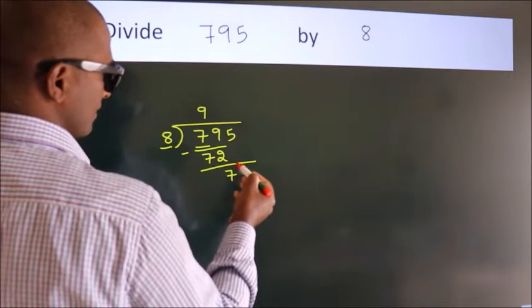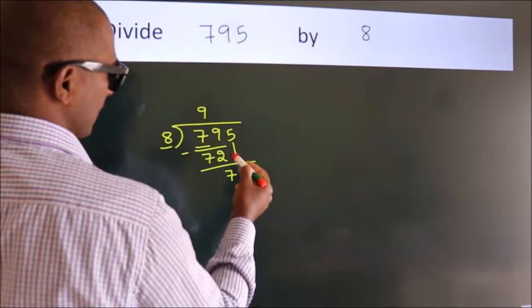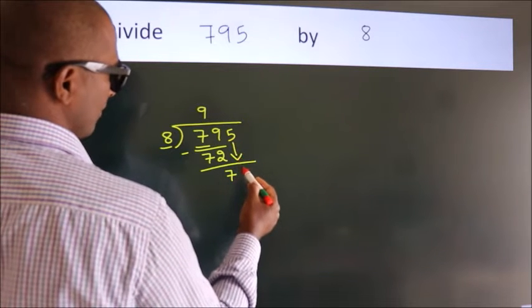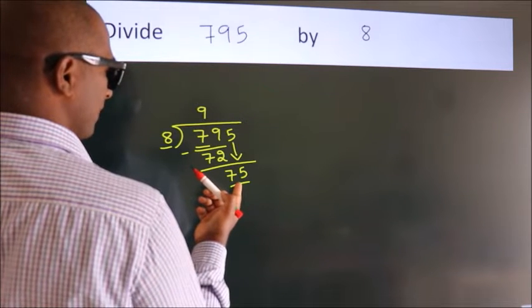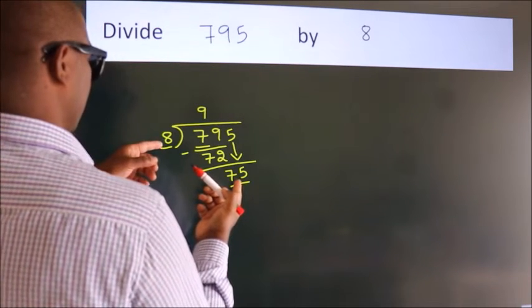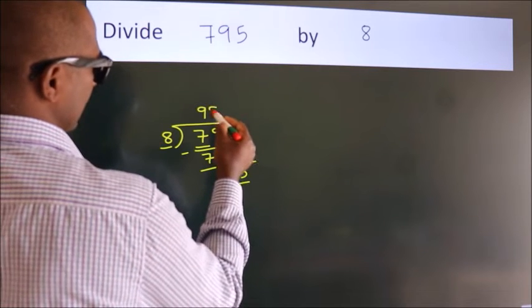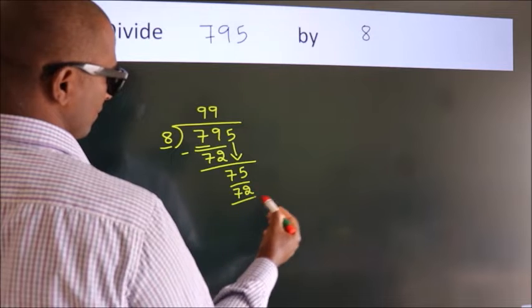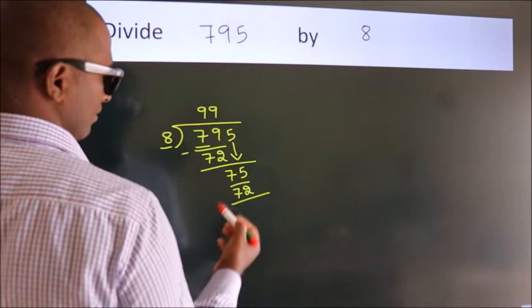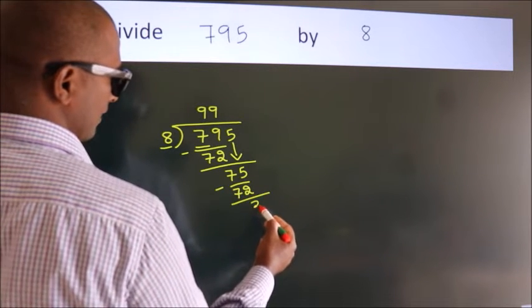After this, bring down the beside number. So 5 down. So 75. A number close to 75 in 8 table is 8 nines, 72. Now we subtract. We get 3.